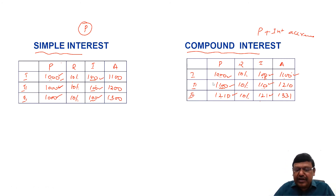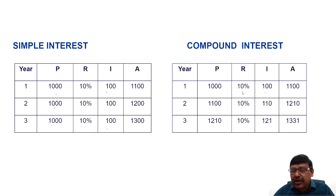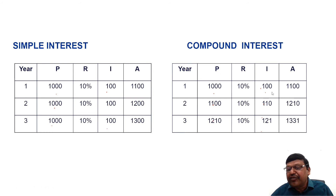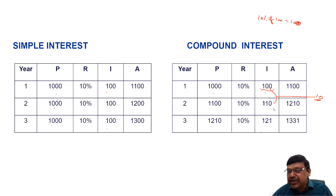Looking at the comparison table: in simple interest, principal remains same and interest for any one year remains same. In compound interest, principal is not same, hence interest for any one year is not same. One more observation: the difference between first year and second year interest in CI is 10 rupees, which is 10 percent of 100 — the first year interest amount.